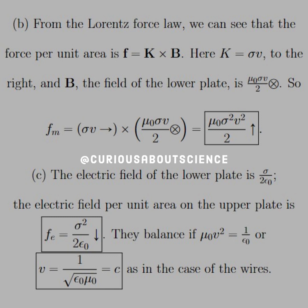So since we're looking at the upper plate, we need the field of the lower plate, which is mu naught sigma v over 2 going into the page. So the magnetic force per unit area is sigma v to the right, because that's where the current's moving,